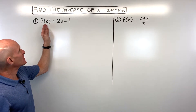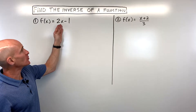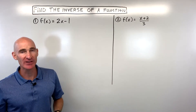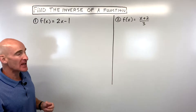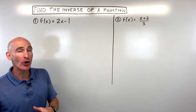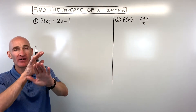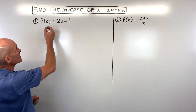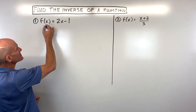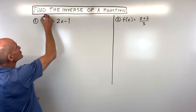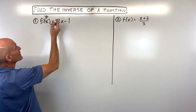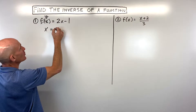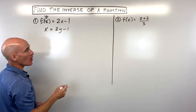When you have a function, let's say f of x equals 2x minus 1, how do you find the inverse of that function? It's pretty simple. All you have to do is interchange the x's and the y's and solve for the new y. We can think of f of x as our y value, and we're going to interchange x and y — so x equals 2y minus 1.